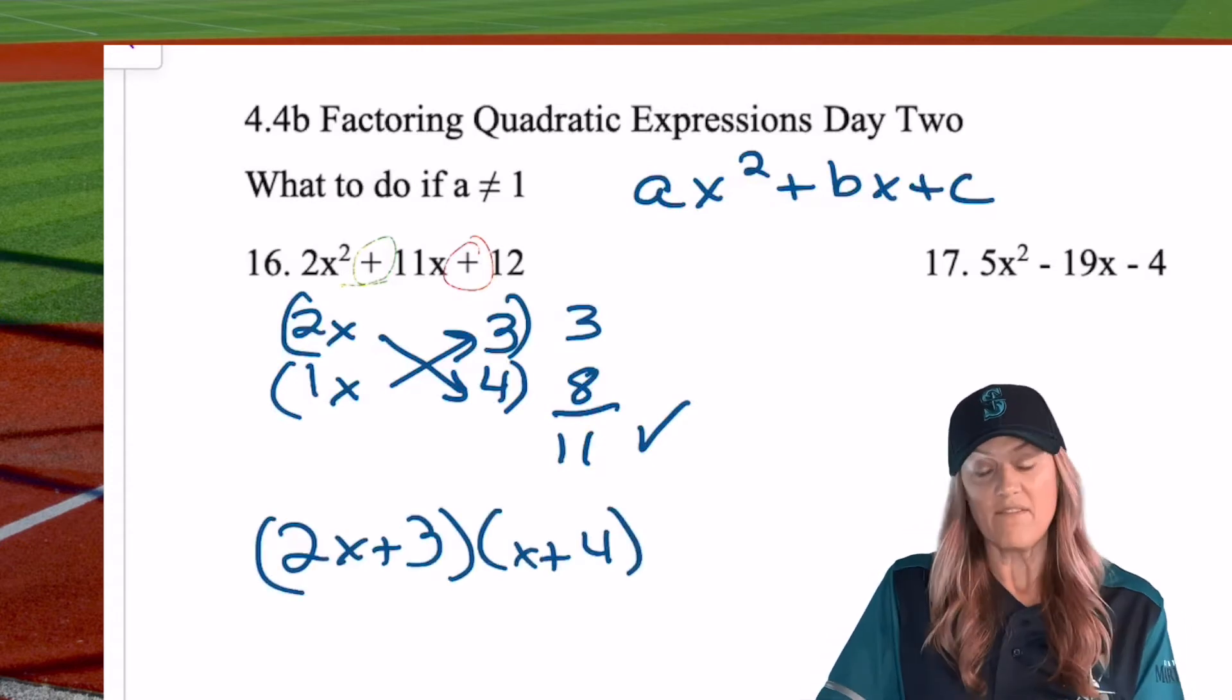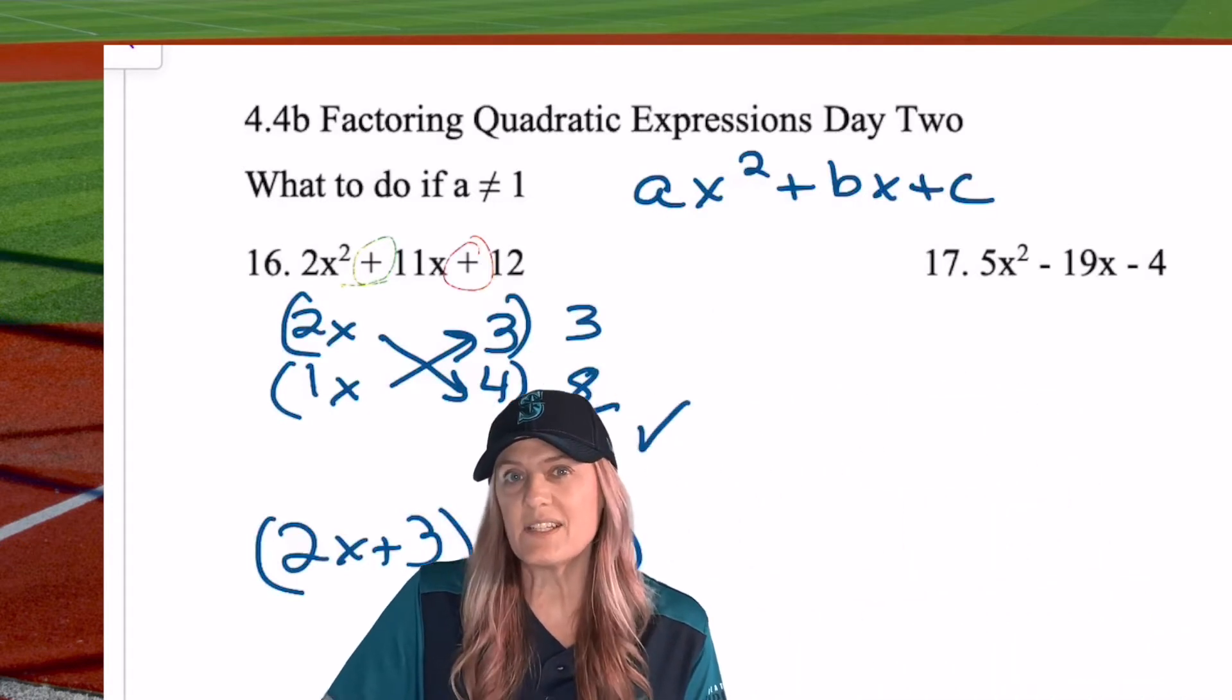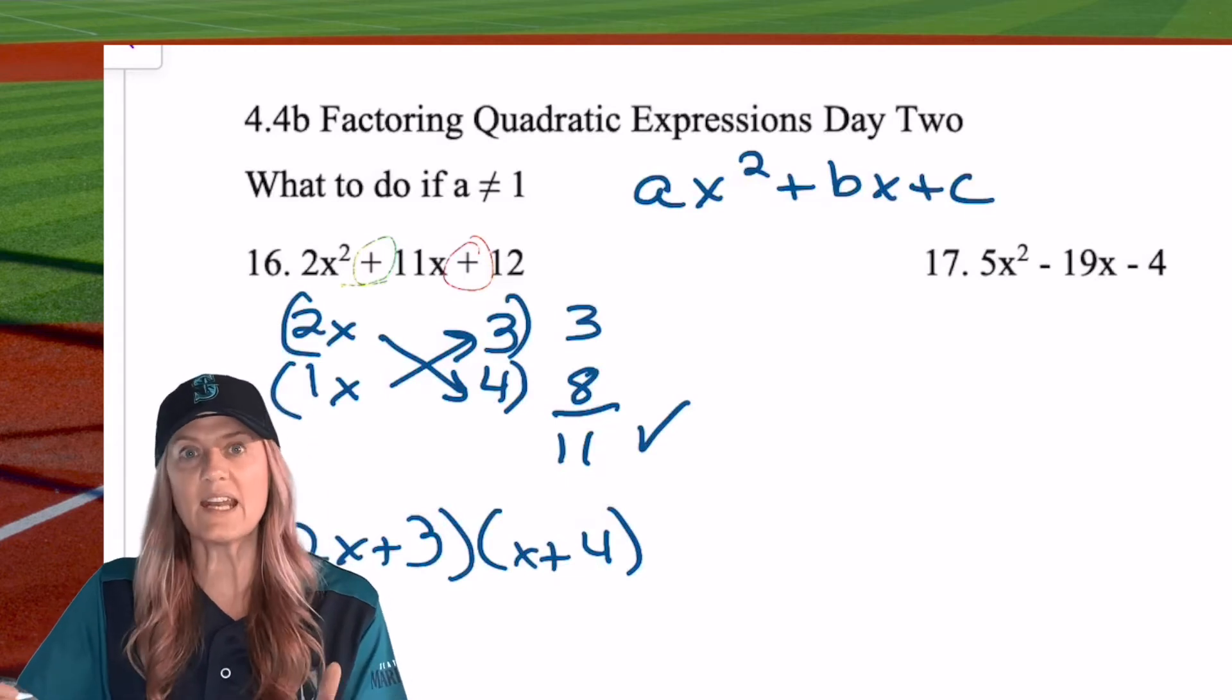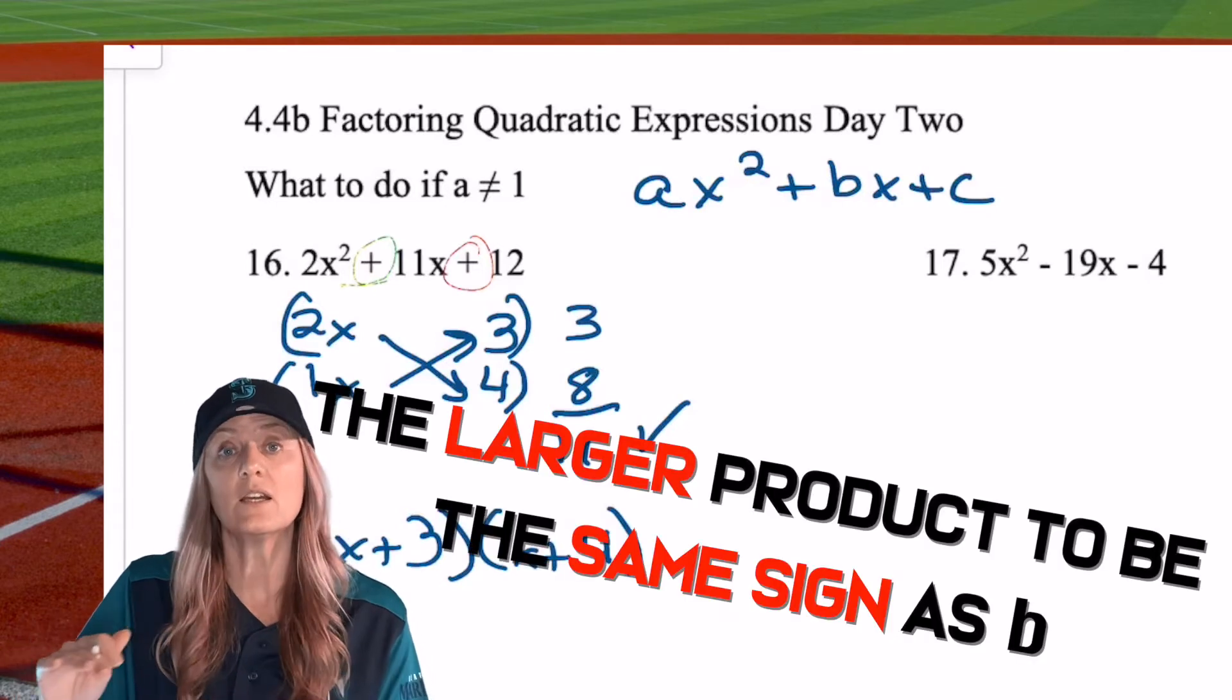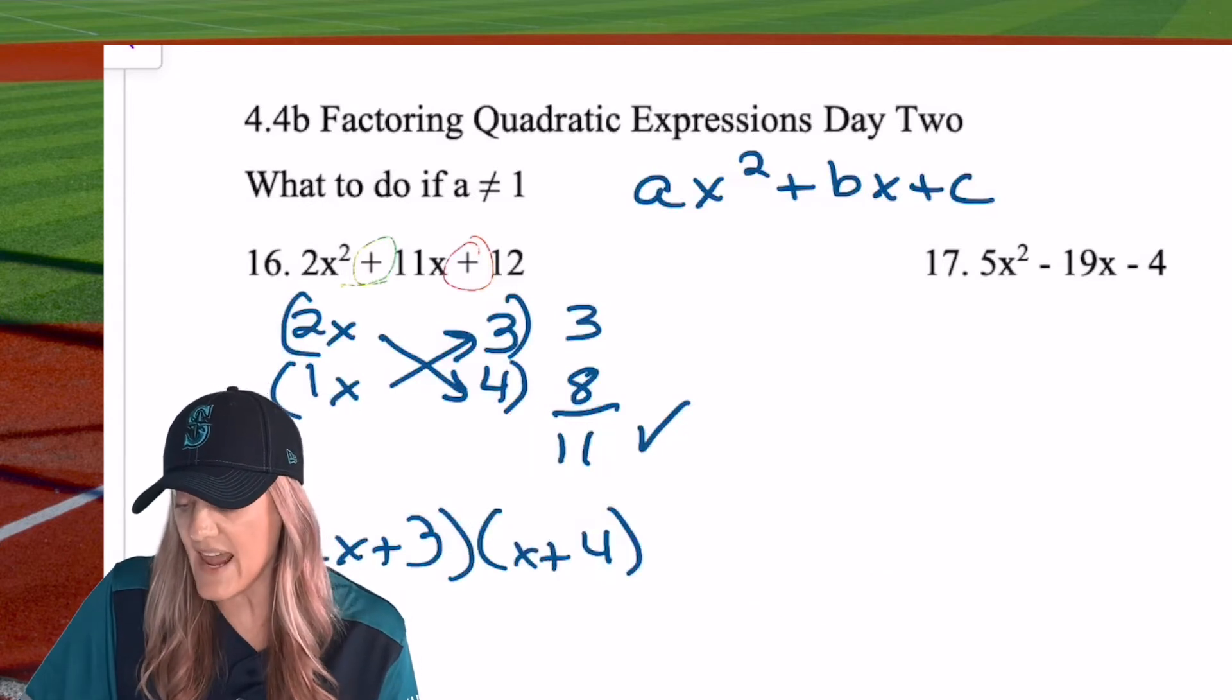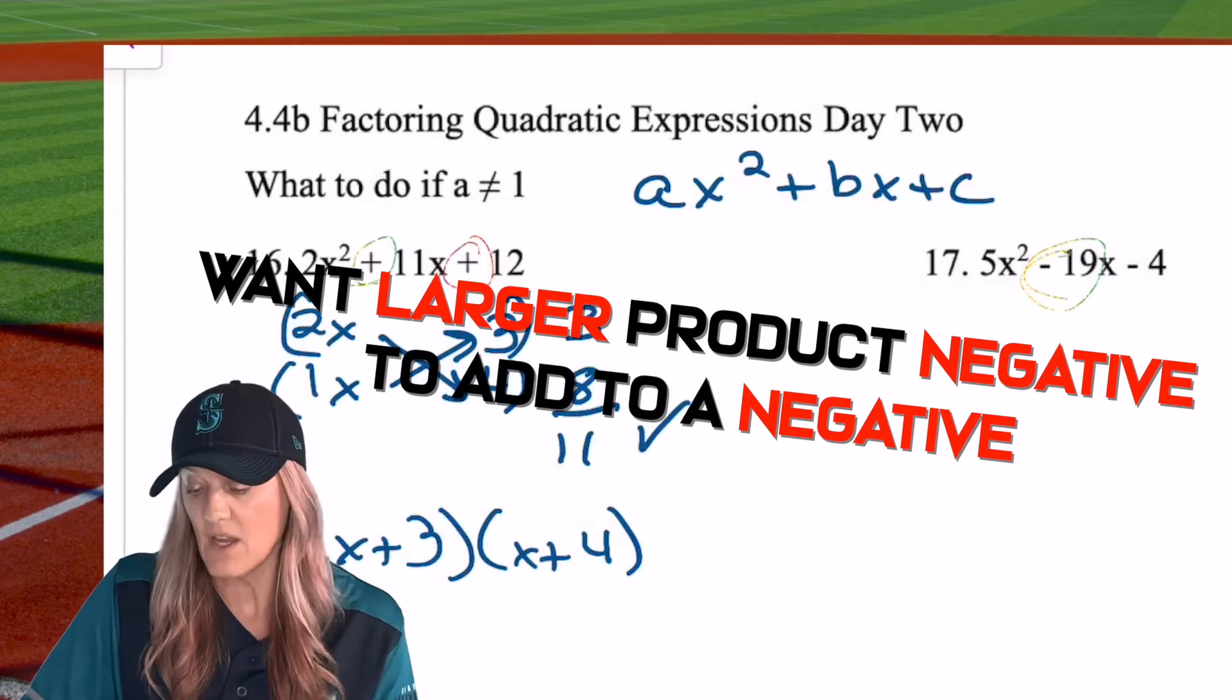Moving on. 5x squared minus 19x minus 4. Looking at number 17. This time c is negative, which means we're going to have a positive and a negative. And then do you remember the rule? When we do our crisscross, we want the larger product to be the same sign as b. This time b is negative. So I want my larger product to be negative.